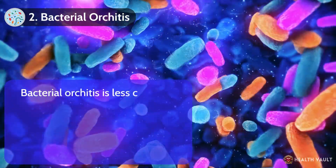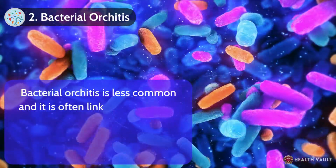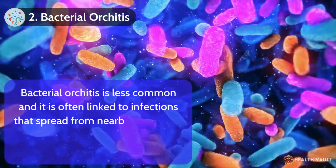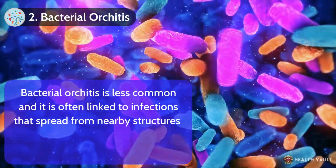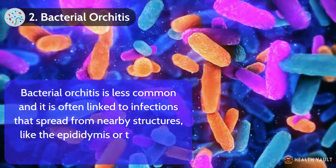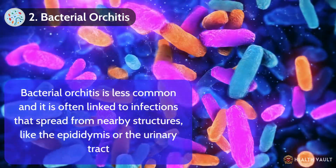Bacterial orchitis is less common, and it is often linked to infections that spread from nearby structures, like the epididymis or the urinary tract.